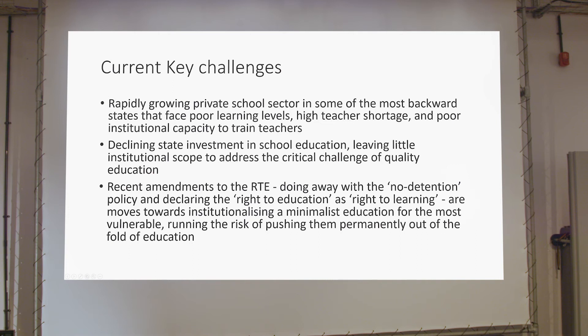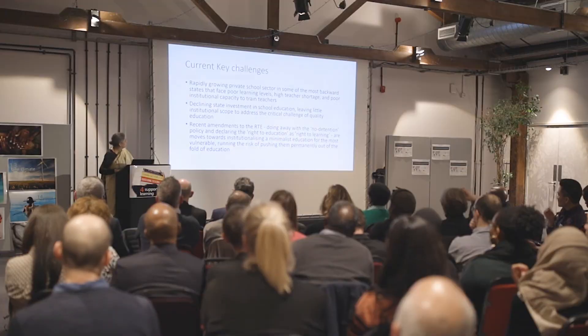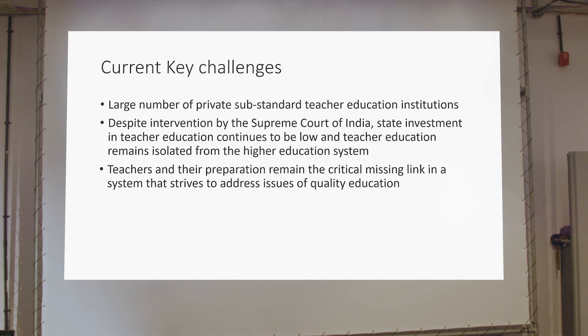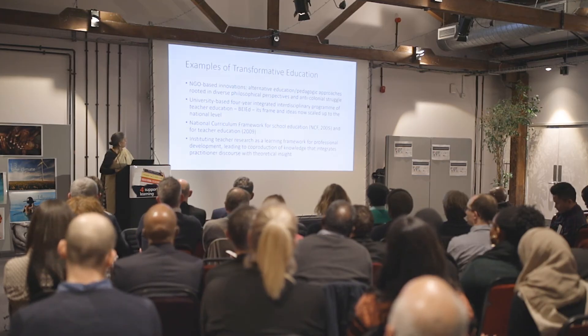There have been recent amendments to the Right to Education which have taken away the very potency of the act itself — now we are calling the right to education as 'right to learning,' so everything is boiling down to learning outcomes, which is not really helping us achieve the goals of education. A large number of private substandard teacher education institutes exist, and despite intervention by the Supreme Court of India, state investment in teacher education continues to be low. The system of teacher preparation is isolated from higher education, which is a key problem, and teacher preparation remains a very critical missing link.